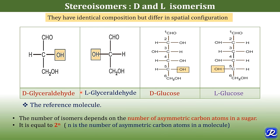The number of isomers is calculated as 2 raised to the power N, where N is the number of asymmetric carbon atoms in a molecule. For example, glyceraldehyde has only one asymmetric carbon atom, so 2 raised to the power 1 equals 2 — glyceraldehyde has only two stereoisomers.